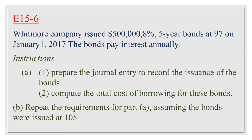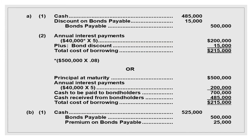Exercise 15-6: W Company issued $500,000, 8%, five-year bonds at 97 on January 1. Issuing at 97 means issuing at a discount — each bond has a face value of $100 but is issued at $97. Instructions: (a) prepare the journal entry to record the issuance and compute the total cost of borrowing; (b) repeat for bonds issued at 105, which means issuing at a premium — each $100 face value bond issued at $105.